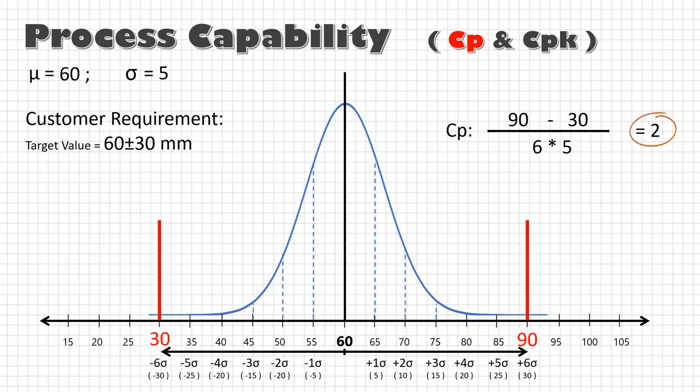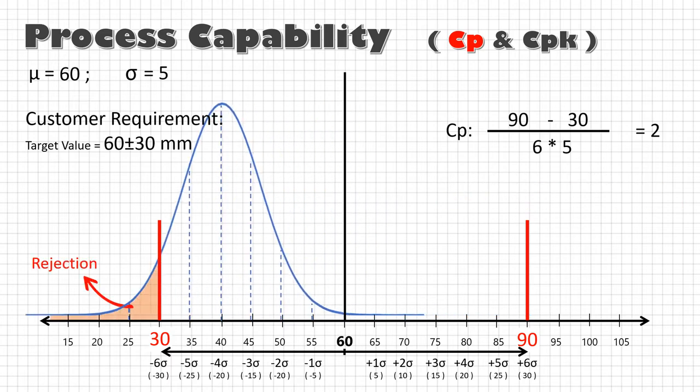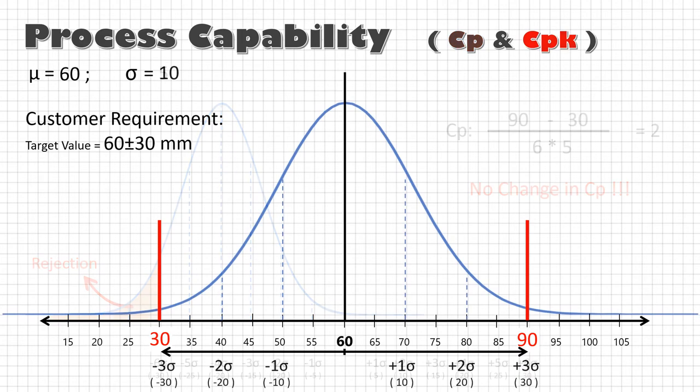However, the problem with Cp is that it is a function of process spread only. And there is no impact of the process location. That means Cp for this process will be same as Cp for this process, which is not good. So we have another index, CpK, that also takes location of the process into account.